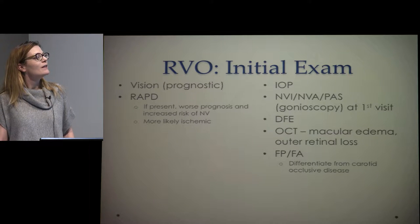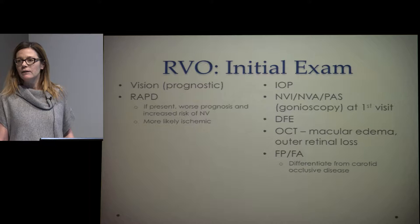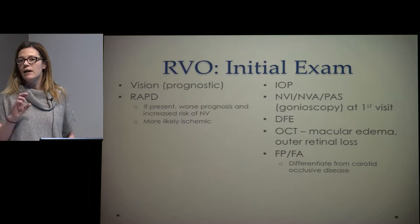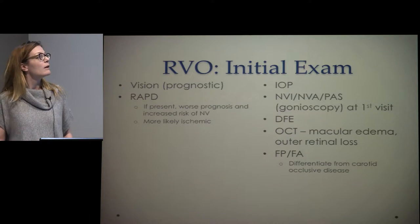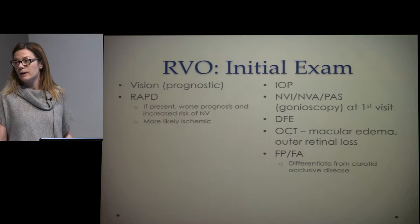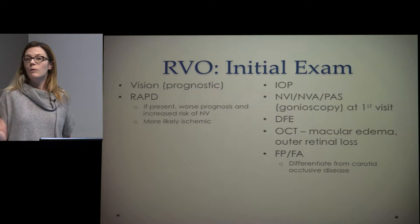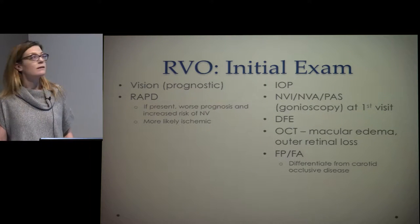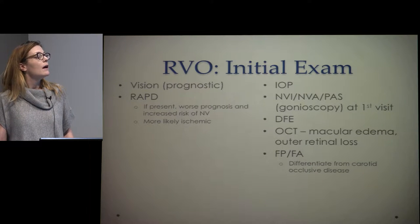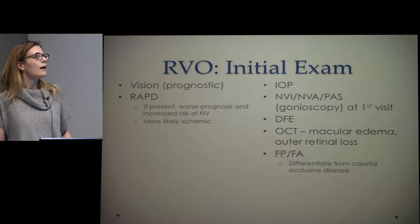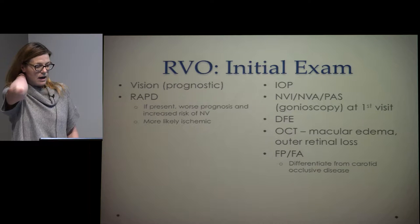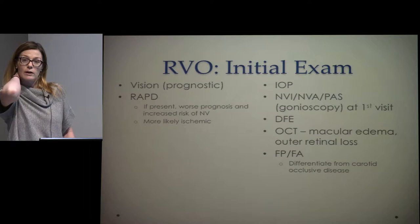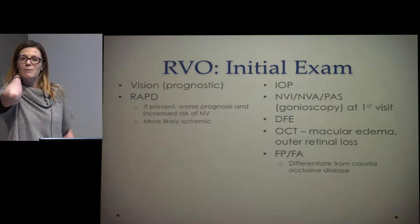When evaluating a patient with a vein occlusion, your basic exam will really guide your prognostic predictions. Vision is probably the biggest factor — worse vision predicts poorer outcomes. An afferent pupillary defect, if present, indicates worse prognosis and increased risk of neovascular disease. A gonioscopy should be done at that first visit looking for subtle neovascularization of the angle and iris, and then every month thereafter.